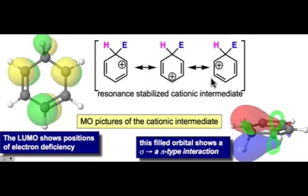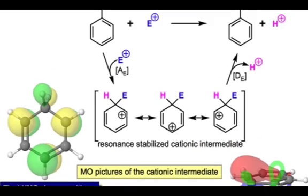This is a stabilizing interaction — it's a donation of the electrons in that σ-bond to that empty orbital in that cationic π system. It's a π-type interaction and we can see that from the shape of the molecular orbital.